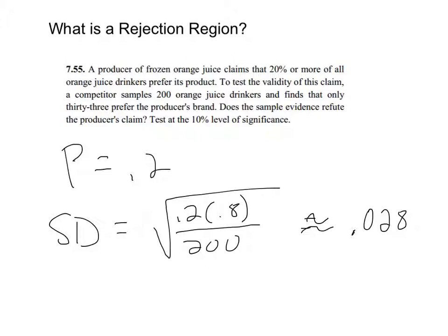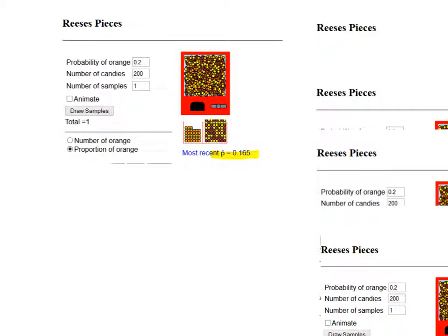So what I did is, I did some background work here to help us try to understand this. There's this applet that Rossman Chance, those two authors, I don't know if they wrote the applet, but that's on their website. And one of the things they use in that book is they talk about the number of orange candies in a package of Reese's Pieces. And in a classroom, I would have had you do this, but since we're not.